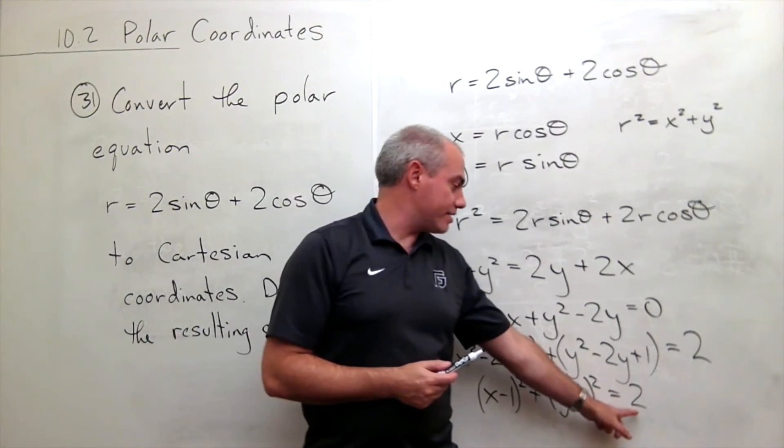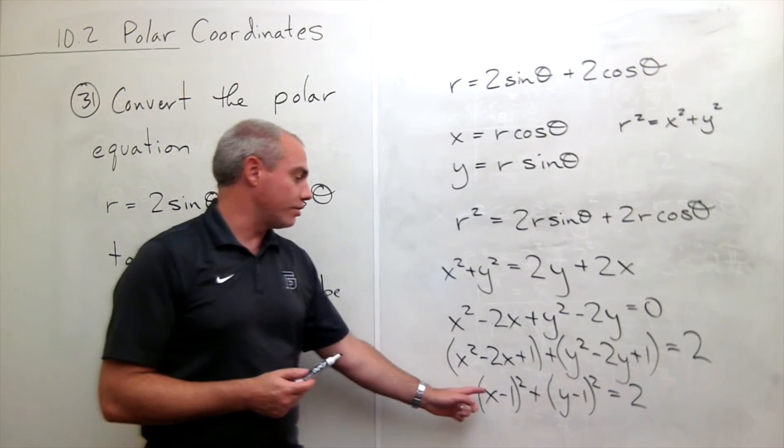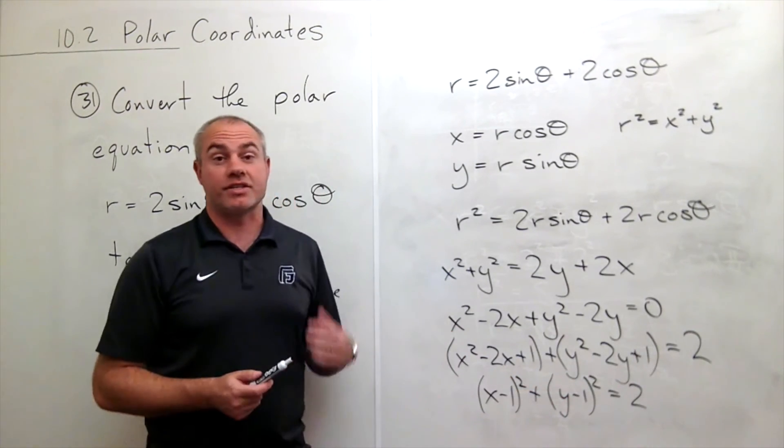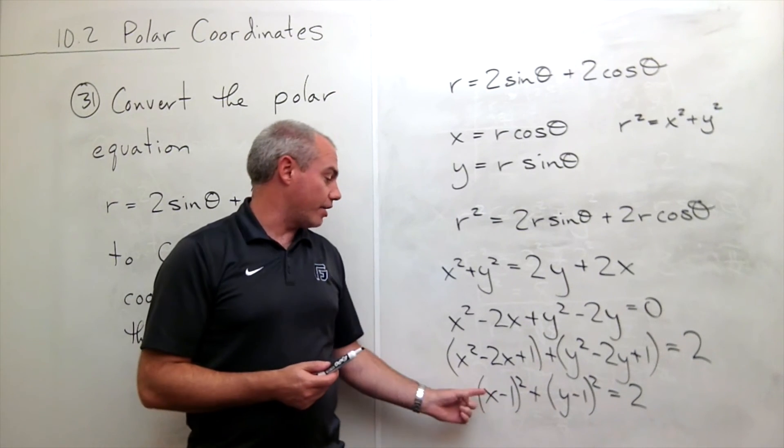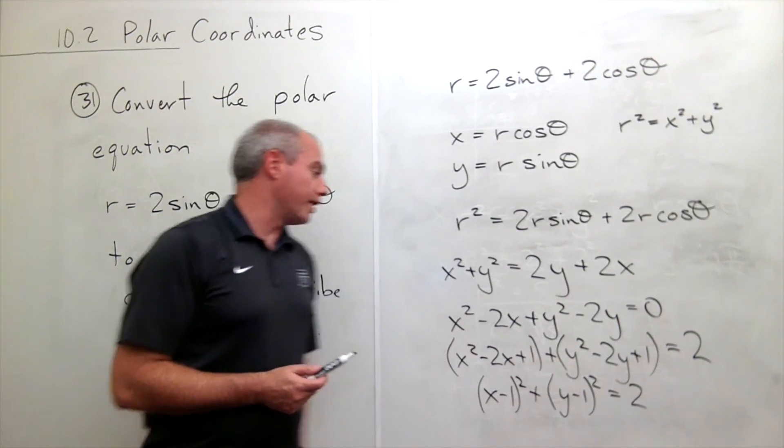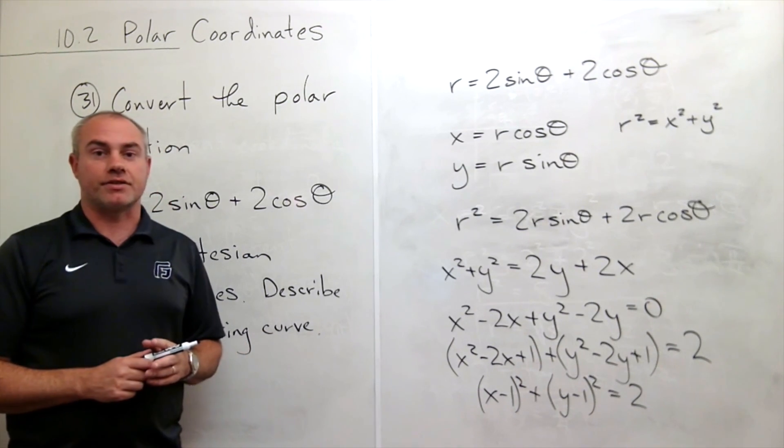It has radius square root of 2 and it is centered at the point 1, 1. So this is a circle of radius square root 2 centered at the point 1, 1, and that's exactly how I would describe the resulting curve.